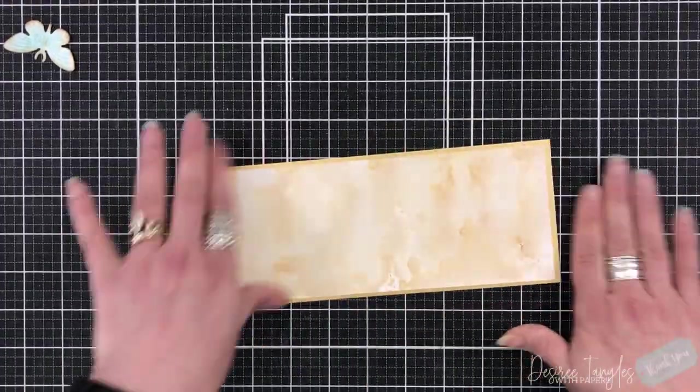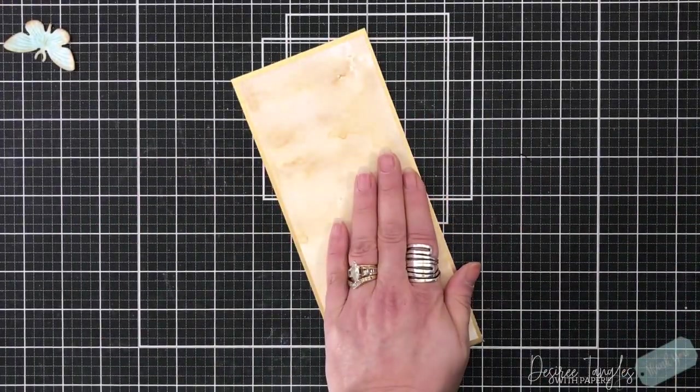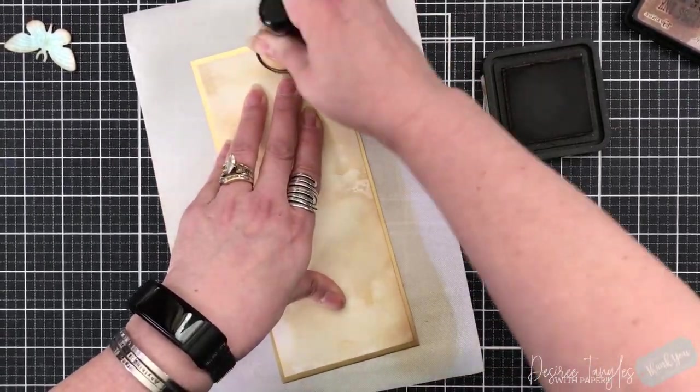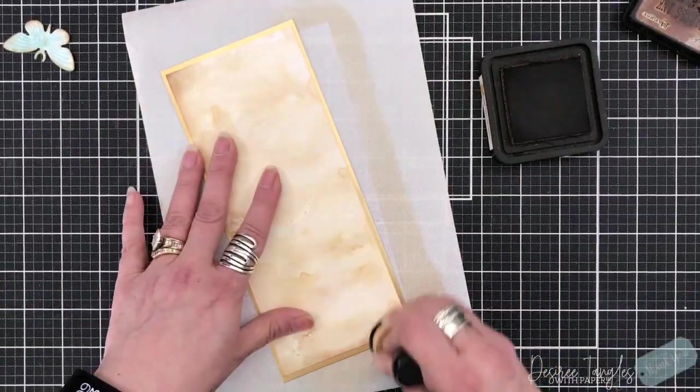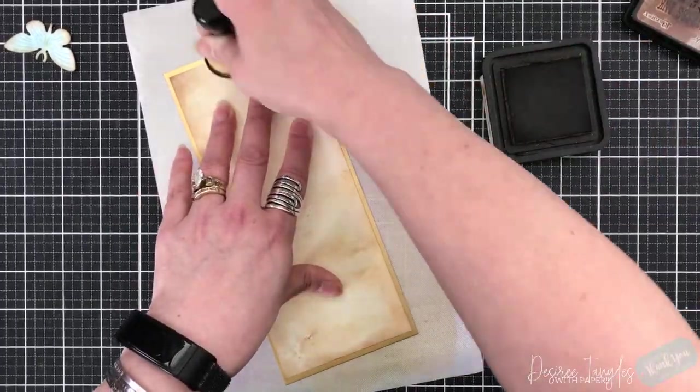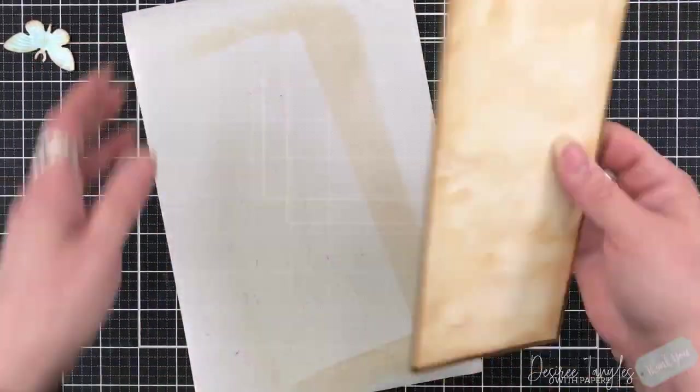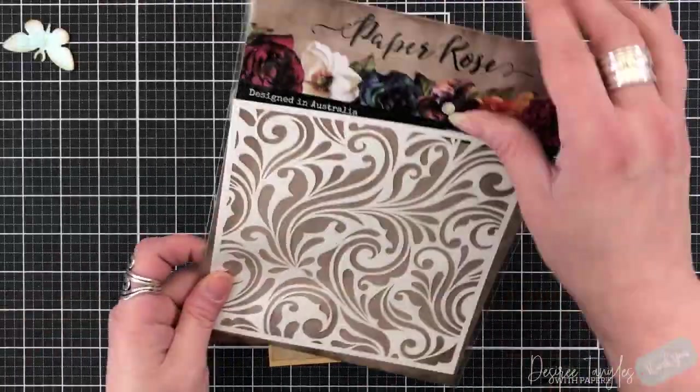I'm going to also set that up onto a black panel. The ultimate size of this slimline will be four inches by nine inches. Going around the edges with more vintage photo again just to darken up those edges.